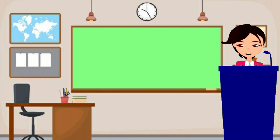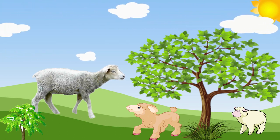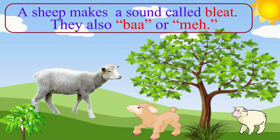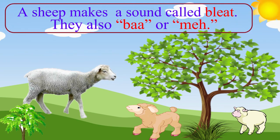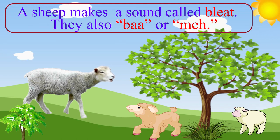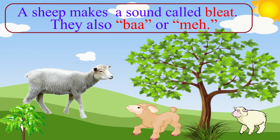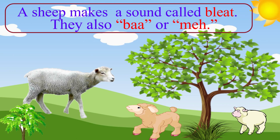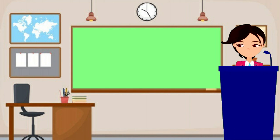Let us see what sound sheep make. We use the word 'ba' or 'may' to describe the sound a sheep makes. 'Bleat' or 'bleating' is another term. Sheep make different sounds at different times. A sheep searching for a lost flock or her lamb will make a sound of extreme concern. A lamb might bleat for its mother if it finds itself alone.